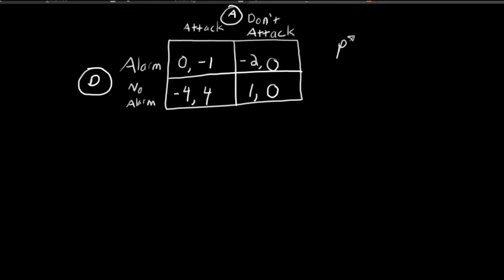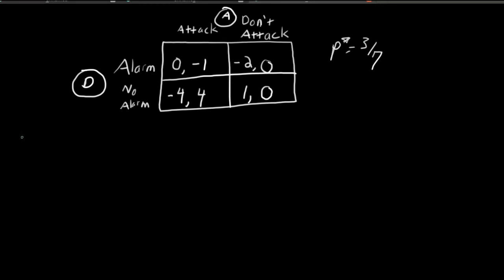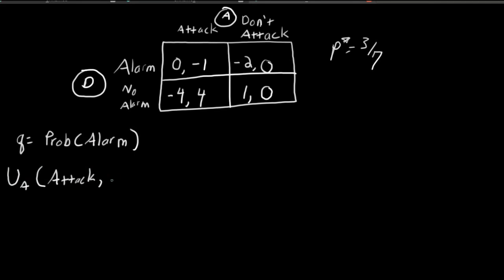We can now do the same thing for the attacker. We let Q be equal to the probability that the defender sounds an alarm. The attacker's expected utility when he chooses to attack and the defender sounds an alarm with probability Q is equal to negative one times Q — because when the defender sounds an alarm the attacker gets negative one — plus one minus Q times four, because when the defender does not sound an alarm and the attacker attacks, he gets a reward of four.